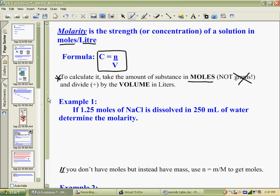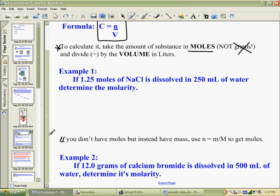Now let's take a look at a couple of examples. If you had 1.25 moles of sodium chloride and dissolve it into 250 mL of water, determine the molarity. Molarity means concentration. That's what we don't know. So we have 1.25 moles, that would be n, 1.25 moles. And our volume is 250 milliliters.